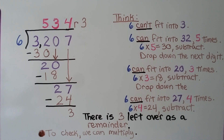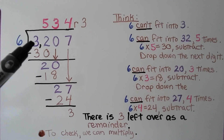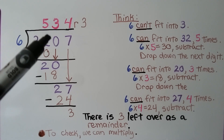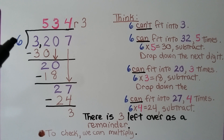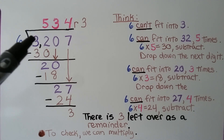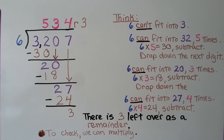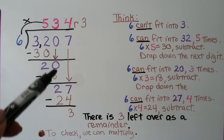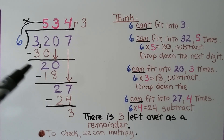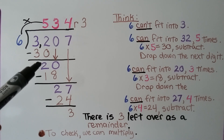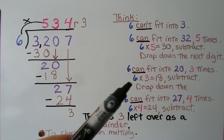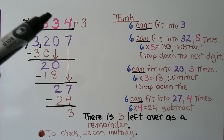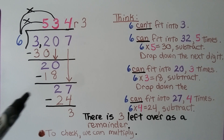Here we have 3,207 divided by 6. We look at this 3,000 and we think 6 cannot fit into this 3. So we can include the hundreds place and say 6 can fit into 32. And 6 times 5 is 30. We write the 30 here, do our subtraction, and that's a 2. Now it's this 0's turn to come down.